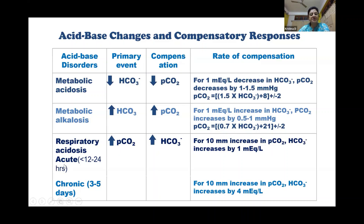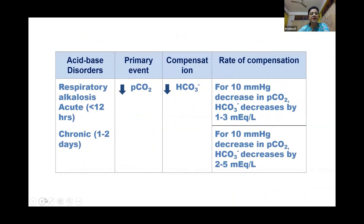For respiratory acidosis, the primary event is increased CO2 and compensation is increased bicarbonate. In acute cases, the rate of compensation: for every 10 mmHg increase in CO2, bicarbonate increases by 1 mEq/L. For chronic cases, for every 10 mmHg increase in CO2, bicarbonate increases by 4 mEq/L. Similarly, in respiratory alkalosis, the primary event is decreased CO2 and compensation is decreased bicarbonate. Rate of compensation: for 10 mmHg decrease in CO2, bicarbonate decreases by 1 to 3 mEq/L in both acute and chronic.